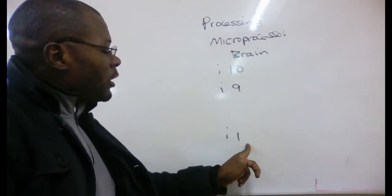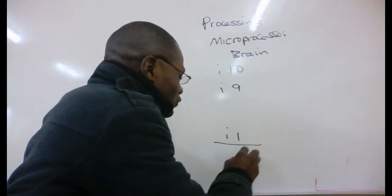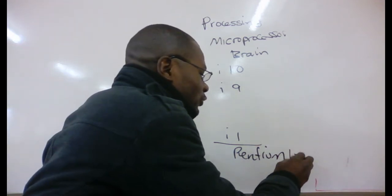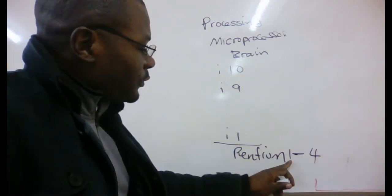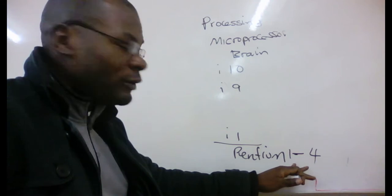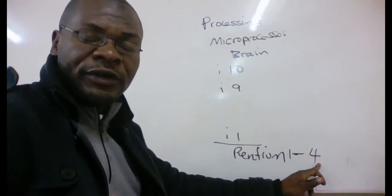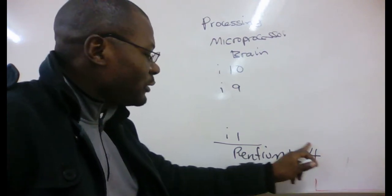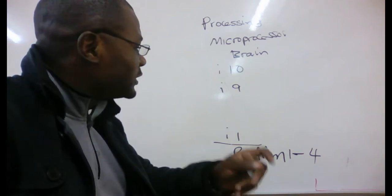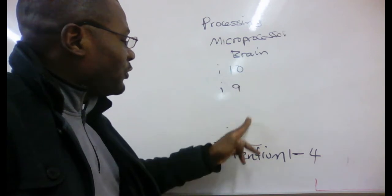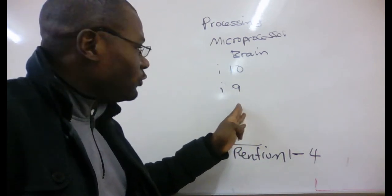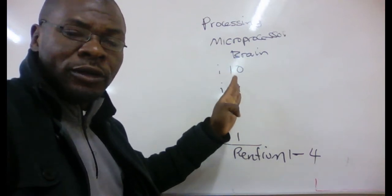Before we started using I-series processors, we were using what we call Pentium processors — Pentium 1 up to Pentium 4. Pentium 4 was obviously faster than the processors before it. But we need to know that we are no longer mostly using Pentium processors; we are now looking at the I-family of processors. Good examples nowadays include the I-series from I1 up to I10. If you want to go shopping for a computer, look for one with a better processor, because this is the brain of the computer.